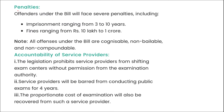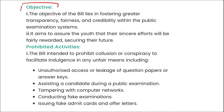Under this bill, offenders will face several penalties including imprisonment ranging from 3 to 10 years and fines ranging from 10 lakh rupees to 1 crore rupees. This is one of the most important steps taken by the government to ensure that students who study for 10 to 12 hours daily for years are not disadvantaged by those who cheat. The bill's objective is to provide transparency, fairness, and credibility within the public examination system.